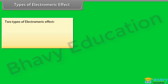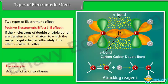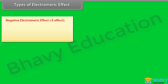There are two types of electromeric effect. In the positive electromeric effect (positive E effect), the pi electrons of a double or triple bond are transferred to the atom to which the reagent ultimately attaches. For example, the addition of acids to alkenes.